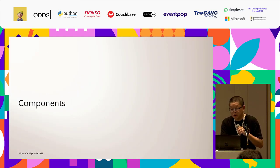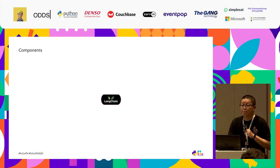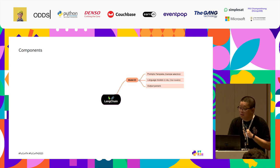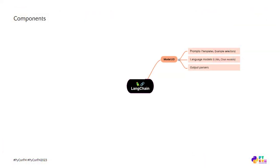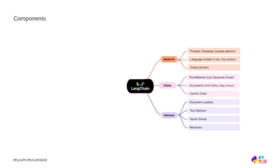So what components does LangChain have? We can group them by features. First, model input and output — such as prompt and language model as we saw previously, or output parsers for formatting output. We have a group called chains for constructing sequences or off-the-shelf chains for specific tasks. We have a group called retrieval — these interface with application-specific data, such as document loaders, text splitters, vector stores, and retrievers. We will learn how to use them later in the demo.